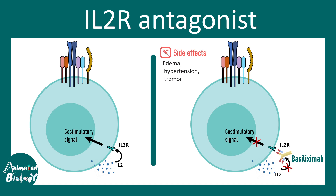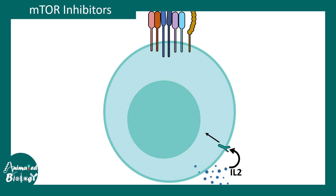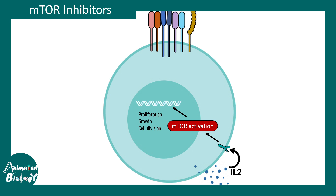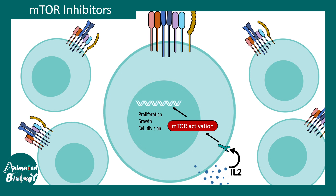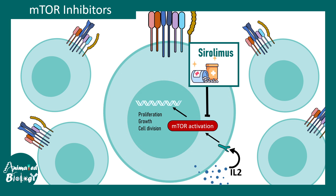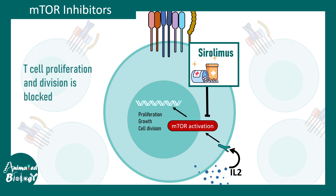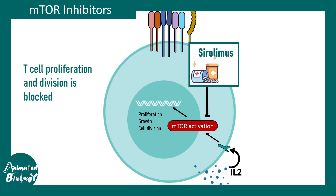Another approach is targeting downstream effectors of the interleukin-2 receptor pathway. Interleukin-2 receptor activation leads to mTOR activation — mTOR is a master regulator of anabolism, driving growth, proliferation, and division. mTOR inhibitors can block the nuclear signal and thereby prevent T cell proliferation, also working as immunosuppressants.